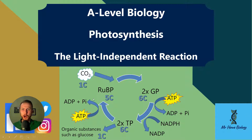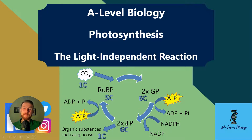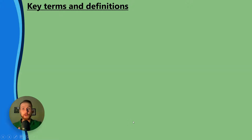I've got a little overview of the carbon cycle here and we can see the carbon dioxide coming in at the top left. We've got RUBP, GP, TP and we're really going to dissect this in a moment. But first of all, let's look at some key terms and definitions that you need to know in order to understand this topic.